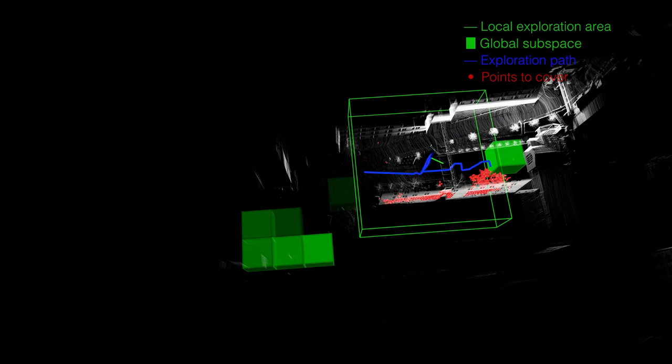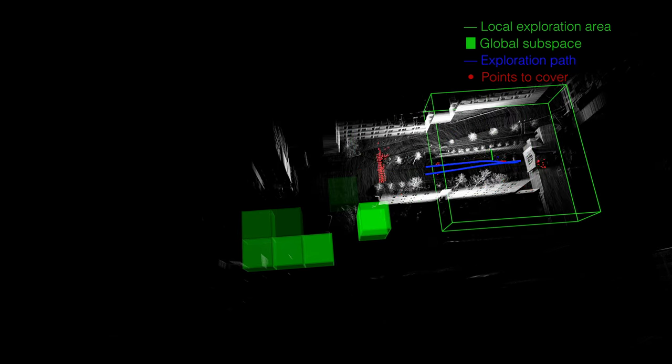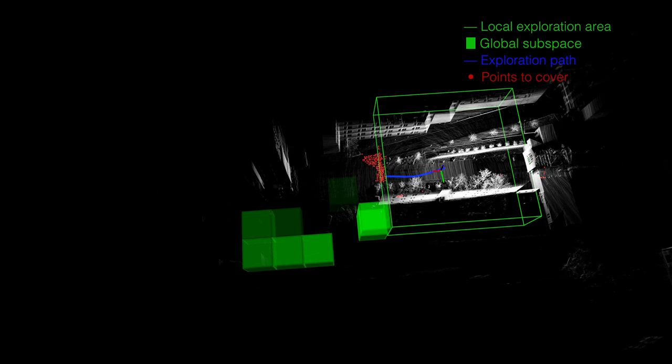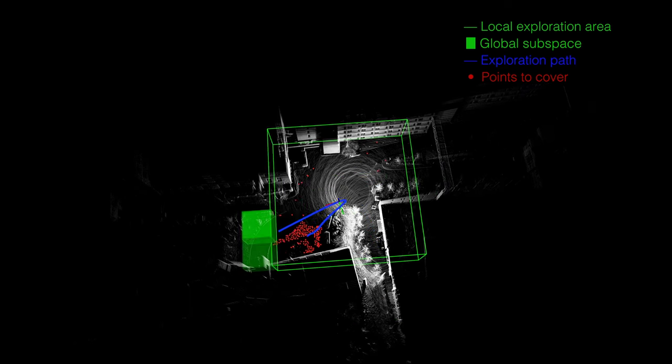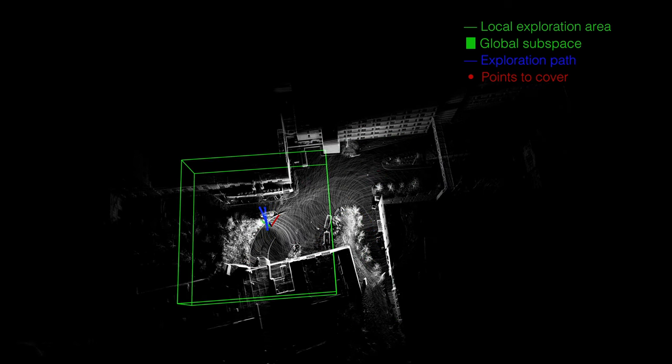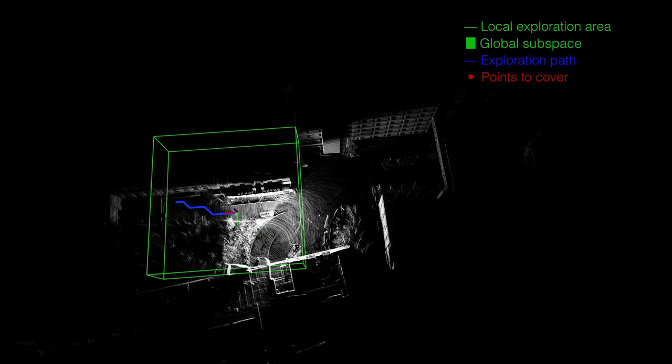What we are seeing now is the overall exploration process at 12 times of real-time speed. The vehicle started from the left side of the scene, explored to the right side, and then returned to the start point in the end.